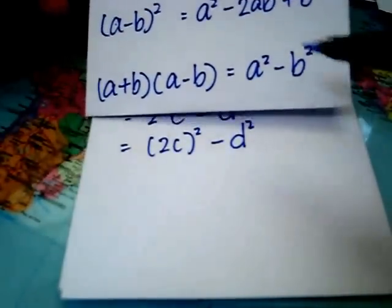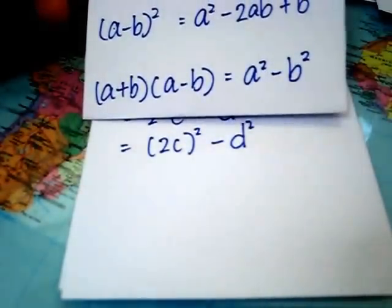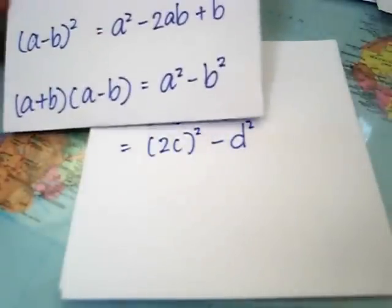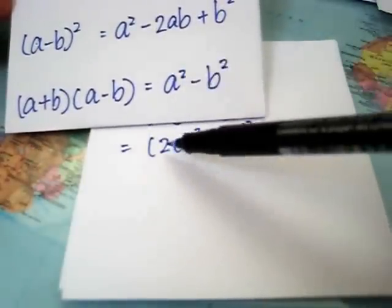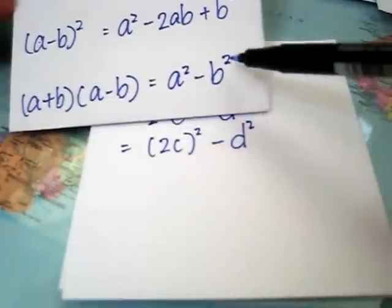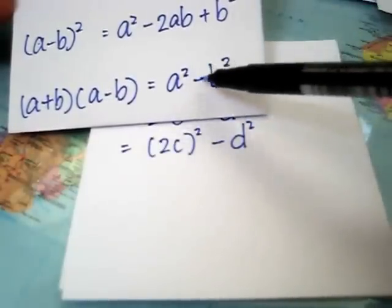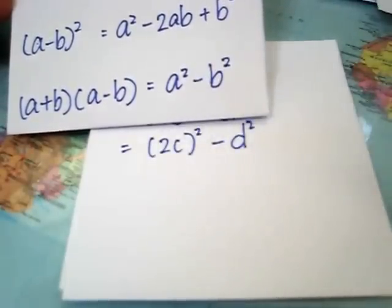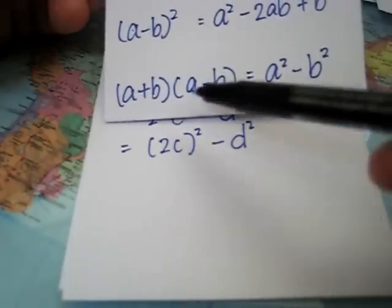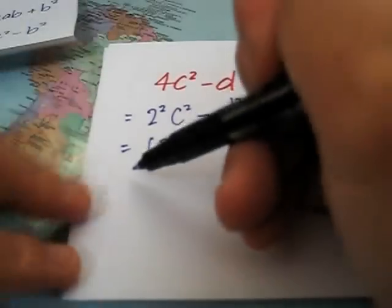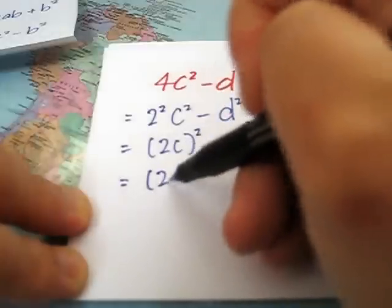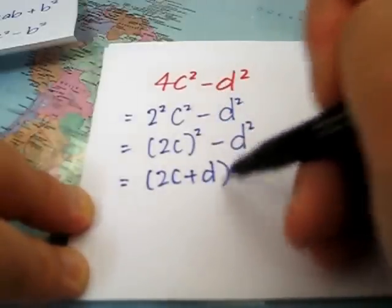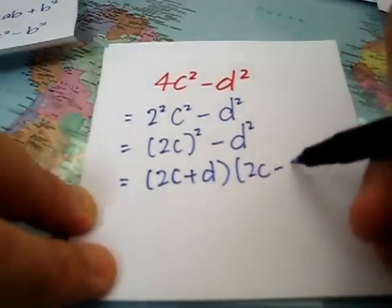It looks like the third special product. Let's do a comparison here. A square and 2c square. B square and d square. Negative sign. In other words, I can rewrite it in this format, which will give us 2c plus d and 2c minus d.